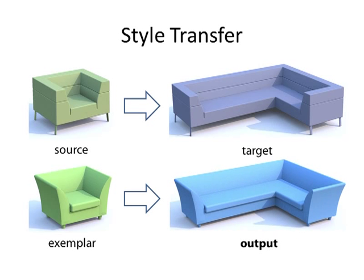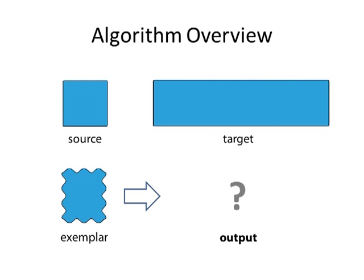The goal is to faithfully transfer the exemplar style to the target in order to construct a novel output shape that has the structure of the target shape. Here is a brief overview of the algorithm. For clarity we use 2D curves as examples. The source, target, and exemplar curves are shown here.